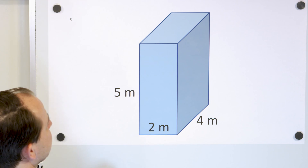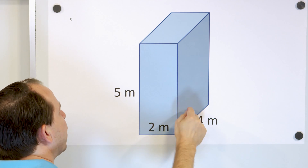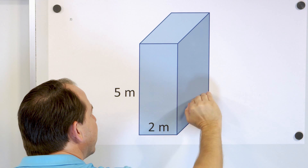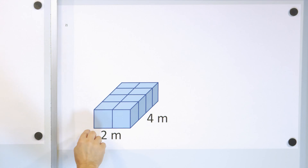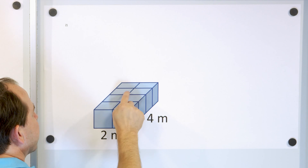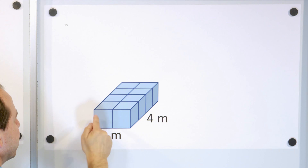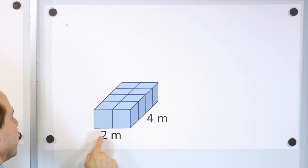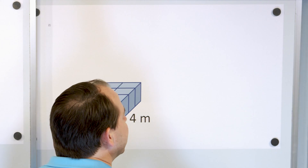Let's take a look at the next rectangular prism. Two meters wide, five meters tall, four meters deep into the board. How many cubes will fit into the bottom-most layer? Well, if it's two meters wide and four meters deep, there'll be four cubes one way and two cubes the other way — one, two, three, four, five, six, seven, eight — because there have to be four cubes this way and two cubes this way. There's a total of eight. Remember, two times four is eight, so eight cubes in that bottom-most layer.